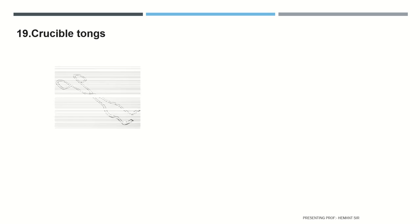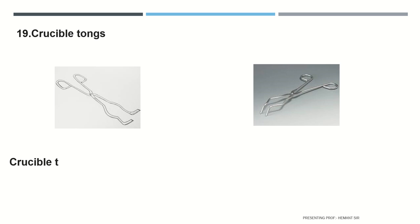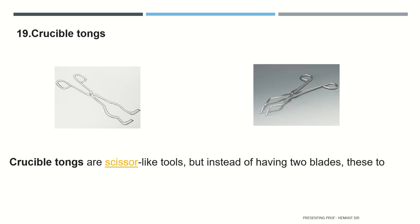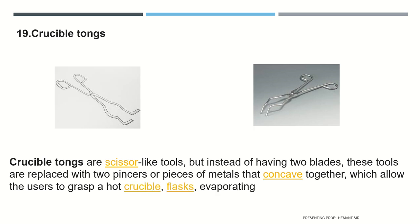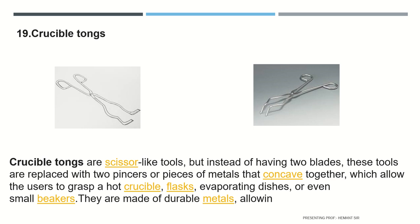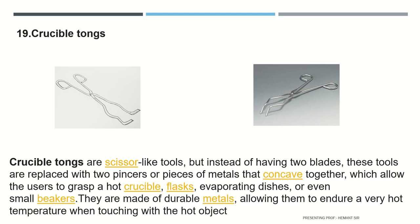Crucible tongs are scissor-like tools, but instead of two blades, they have two pincers or pieces of metal that concave together, allowing users to grasp a hot crucible, evaporating dishes, or even small beakers. They are made of durable metals, allowing them to endure very high temperatures when touching hot objects.